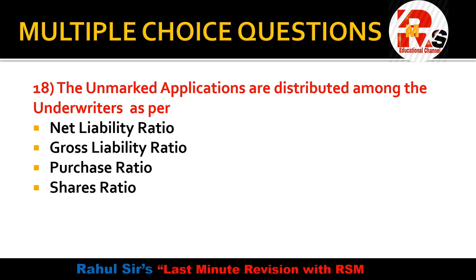Question 17 — the last question: unmarked applications are distributed among underwriters as per which ratio — net liability ratio, gross liability ratio, purchase ratio, or shares ratio? In the underwriting chapter, there are two types of applications: marked applications (with the underwriter's stamp) and unmarked applications (without any underwriter's stamp). Unmarked applications benefit all underwriters and are divided in the gross liability ratio. The correct answer is gross liability ratio.